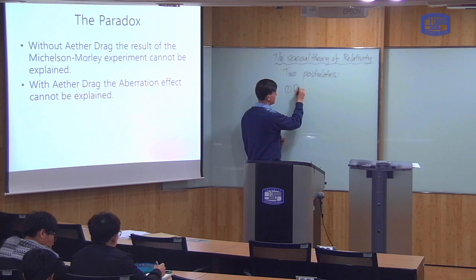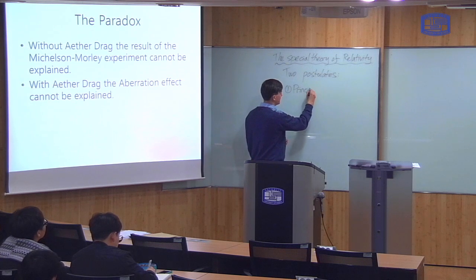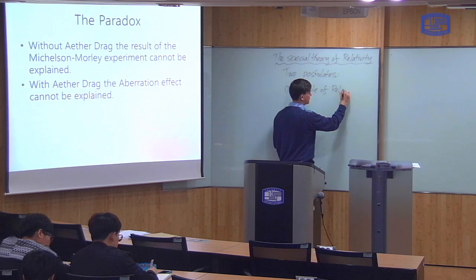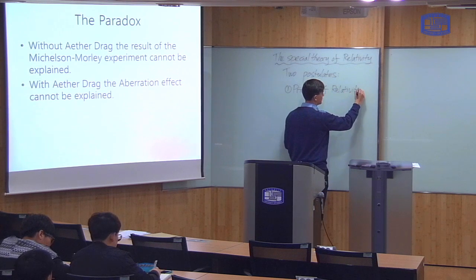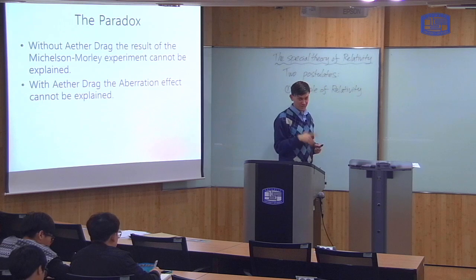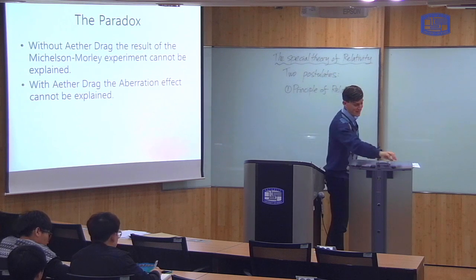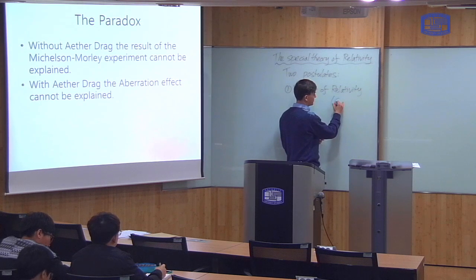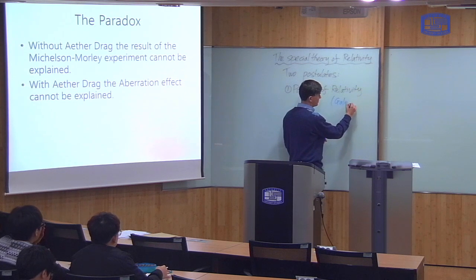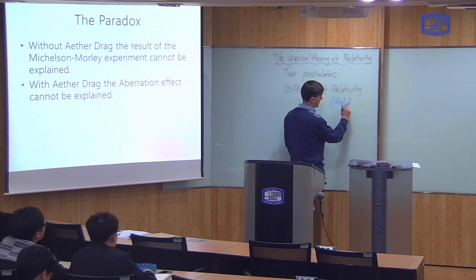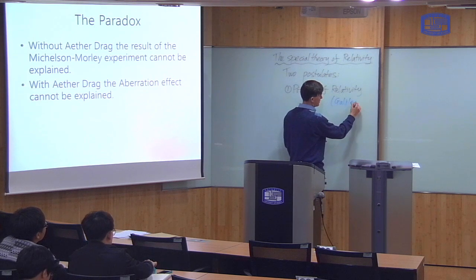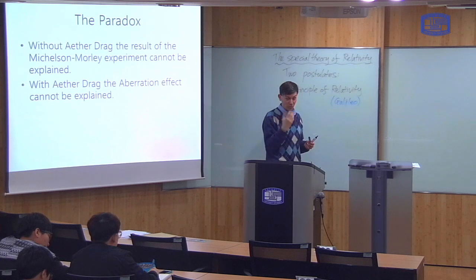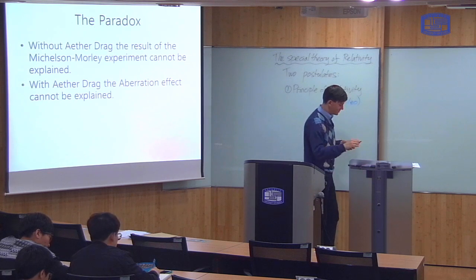Today's class is basically going to be focusing on these postulates — what they are and what they mean. The first postulate is something known as the principle of relativity, from which the theory of relativity gets its name. This is not something discovered by Einstein; it's a principle first described by Galileo a long time ago, but Einstein made use of it in a new way.